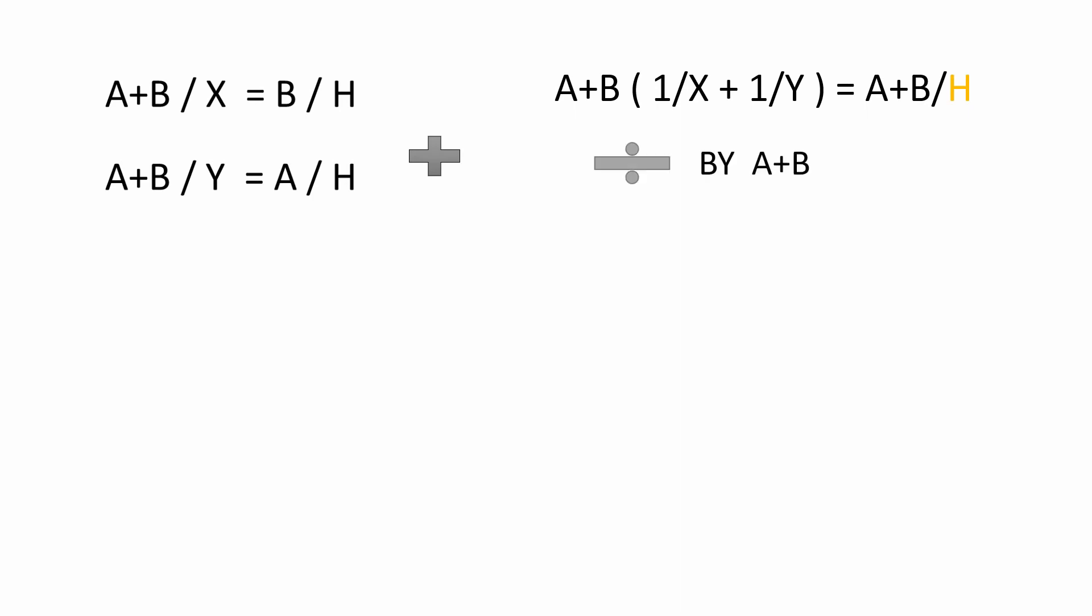To get rid of A and B, we simply divide this whole equation by (A+B) to get 1/X + 1/Y = 1/H. On rearranging and rewriting this equation, we get H = (X × Y) / (X + Y).